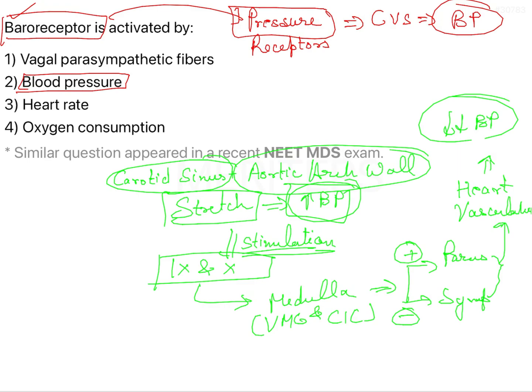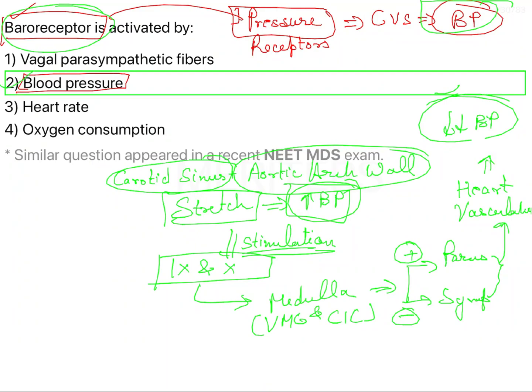This is basically a negative feedback mechanism: whenever there is a BP increase, the baroreceptor comes into effect and ultimately causes a decrease in BP. So baroreceptors are activated by blood pressure or stretch in the wall — the answer is option 2, blood pressure.